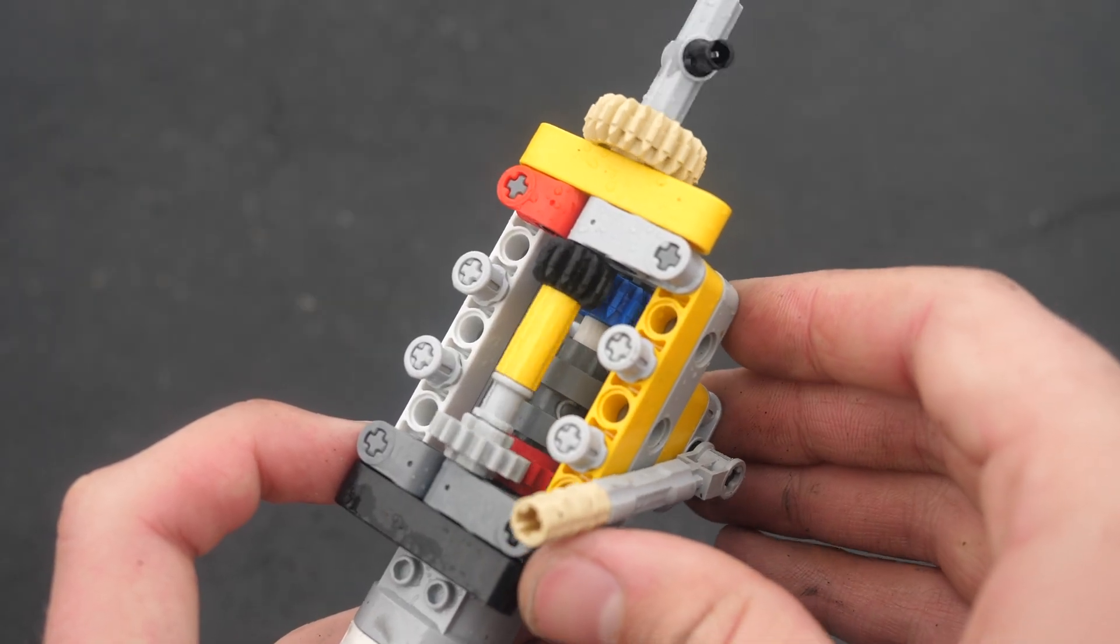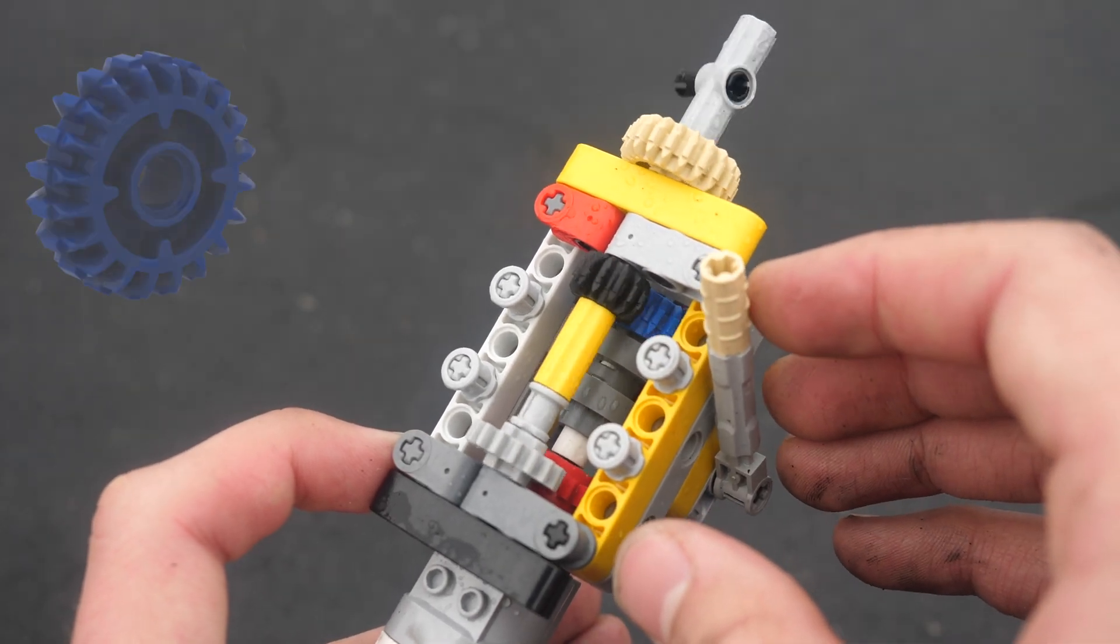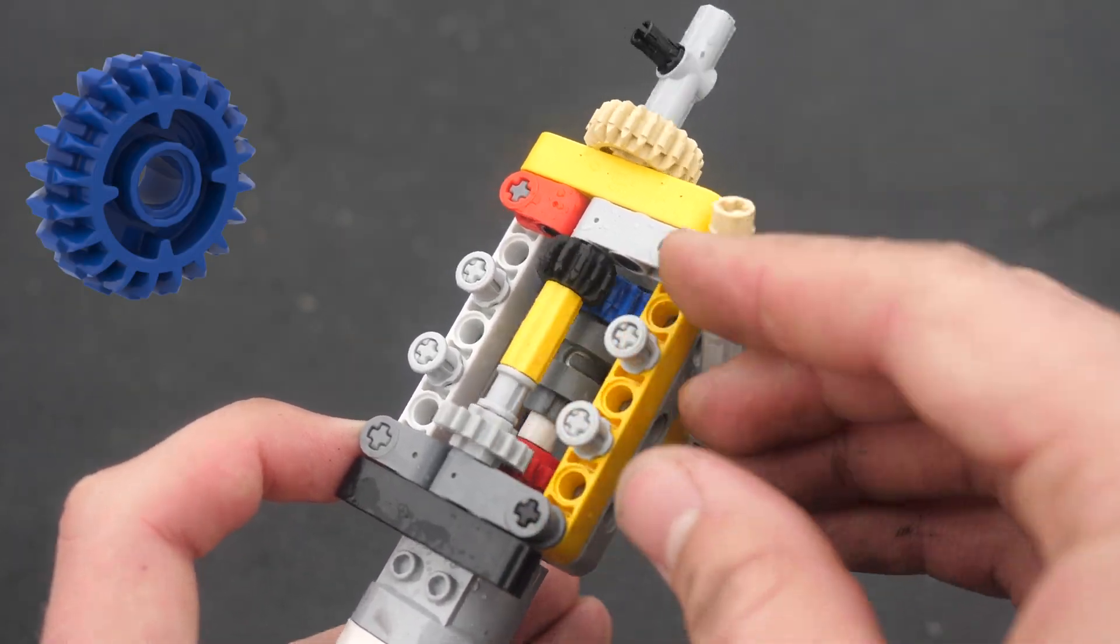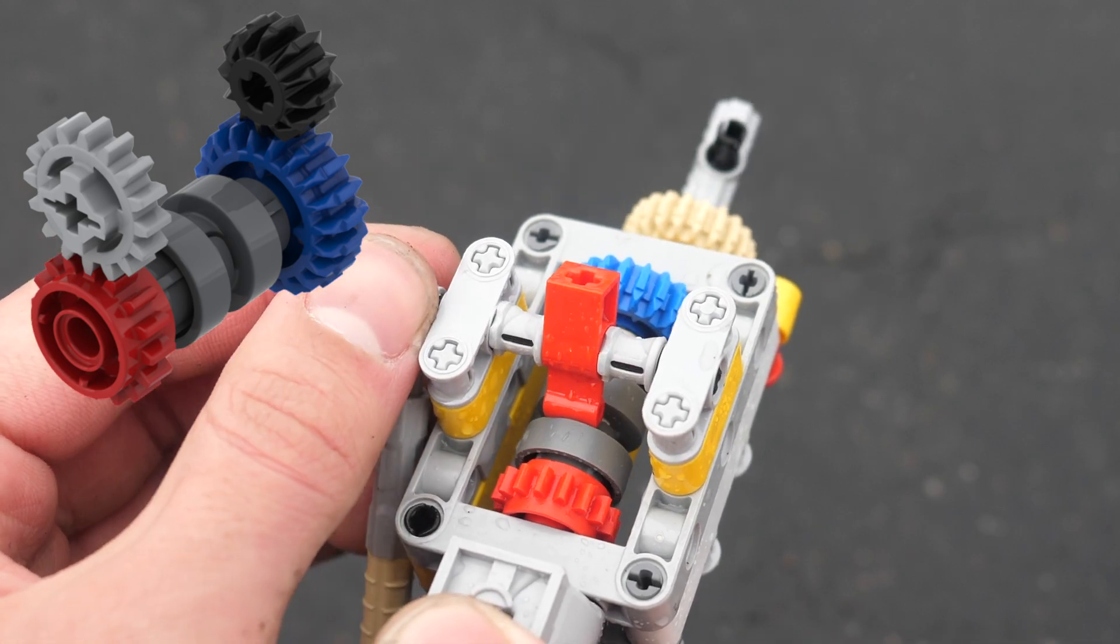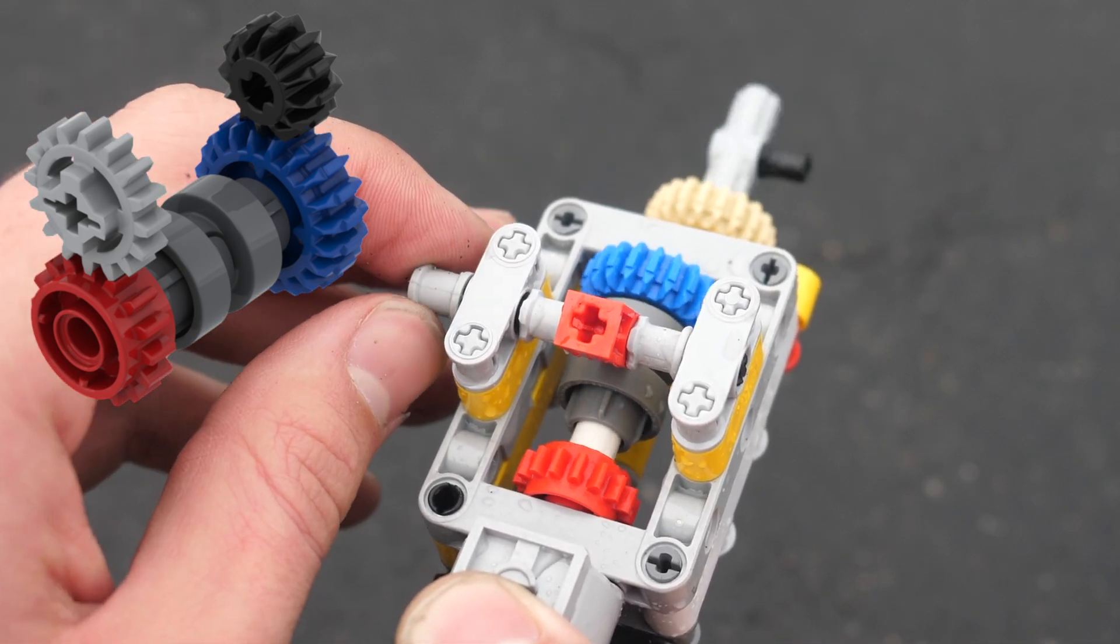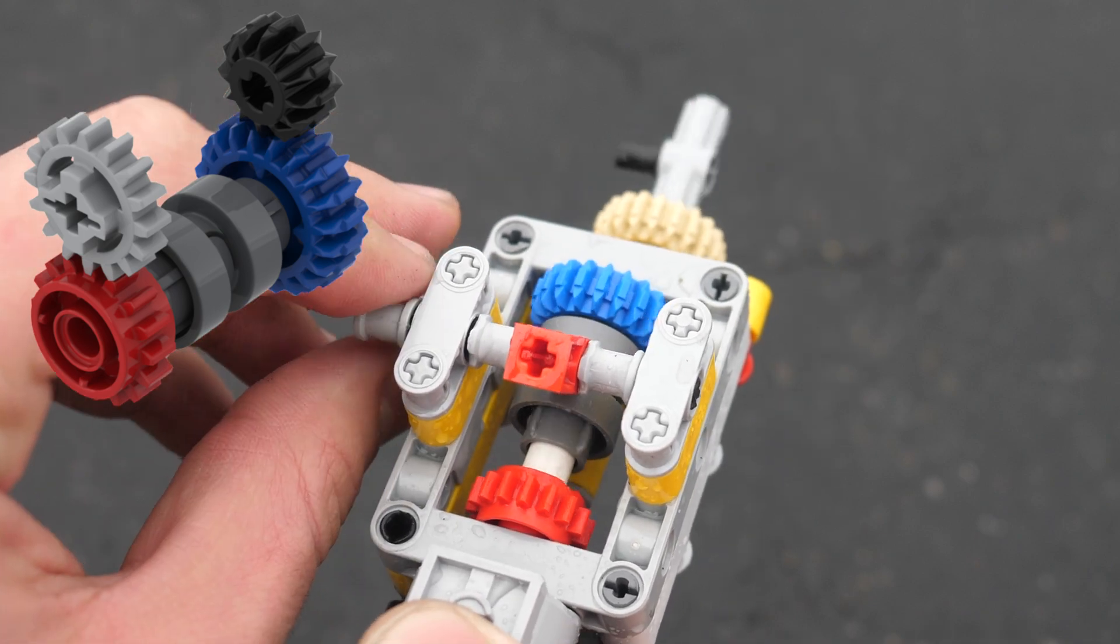I've also made a much simpler version of the 2 speed transmission by utilizing the newer 20 tooth clutch gear. The motor spins the driving ring, and we can either lock into a 1 over 1 ratio or a ratio of 20 over 12.